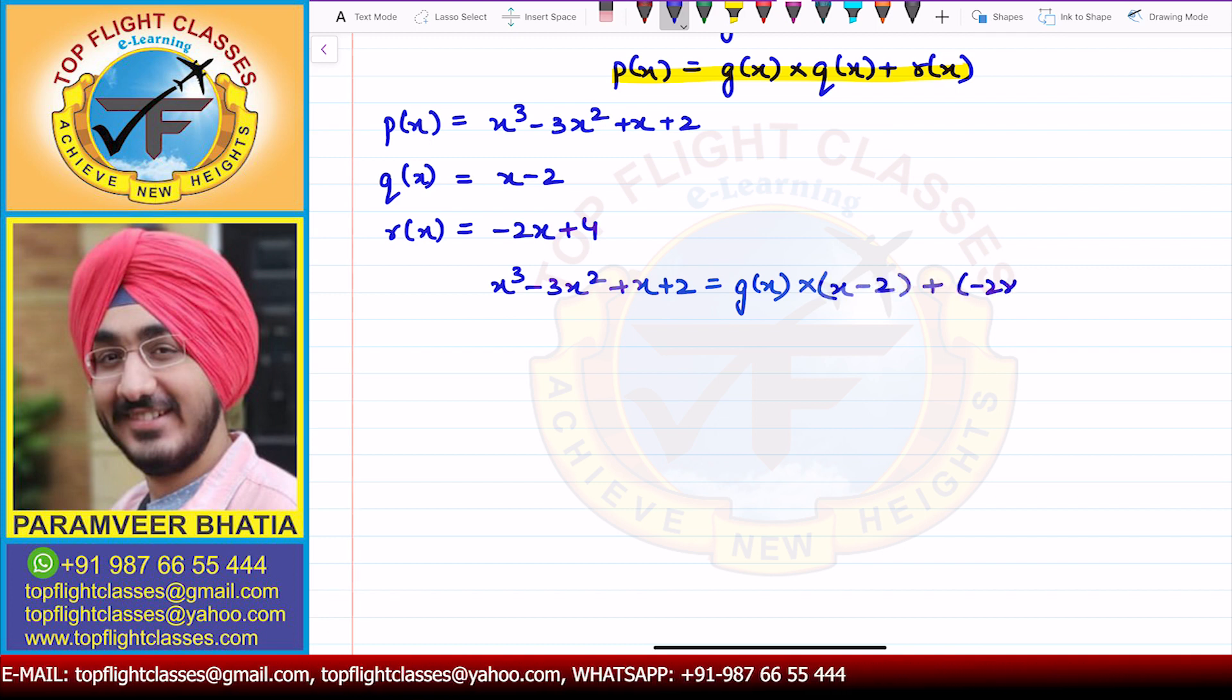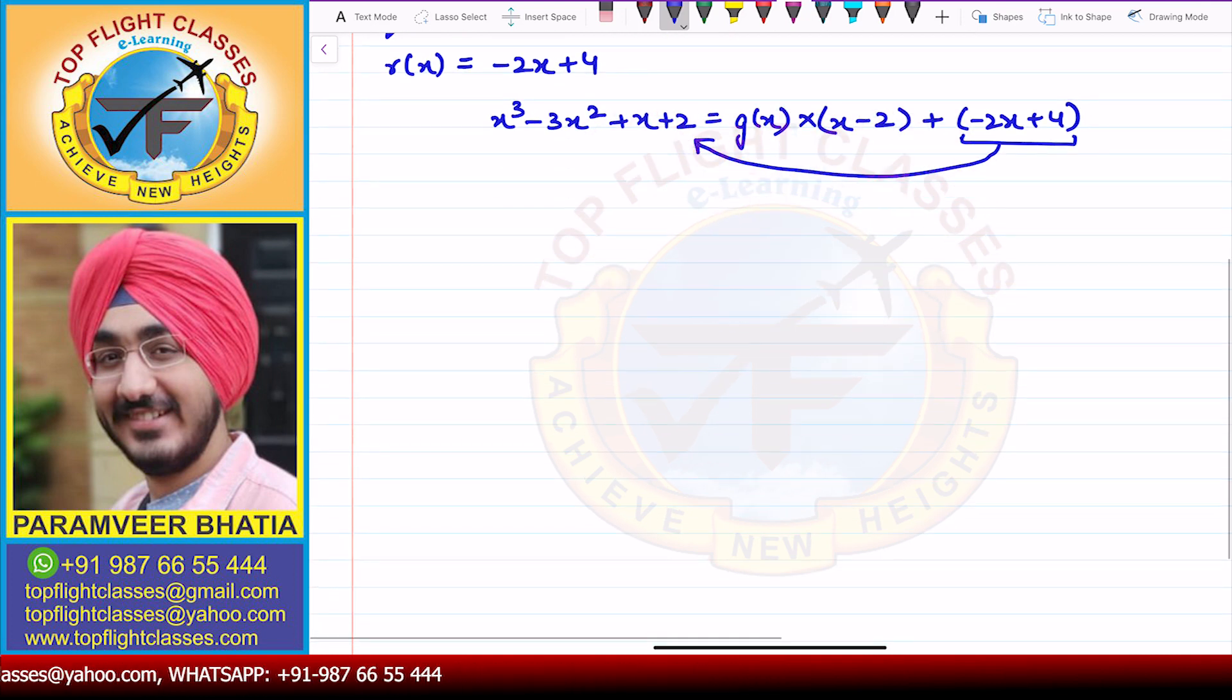Now this -2x + 4, we will take to the left hand side. So from here what I'll get is x³ - 3x² + x + 2 - (-2x + 4) = g(x) × (x - 2).